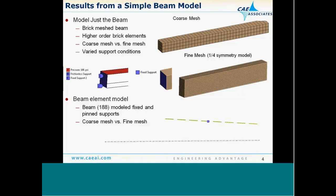The simplest method is to build the beam only, where the column constraints are neglected from the model. For the finite element brick mesh, there's a fixed support where we fix the entire end of the beam, or a frictionless support where the vertical constraint is only applied on the edge. For the beam-only model, we apply either a fixed constraint or a pin constraint at both ends. We can also use symmetry and model half the beam as needed.